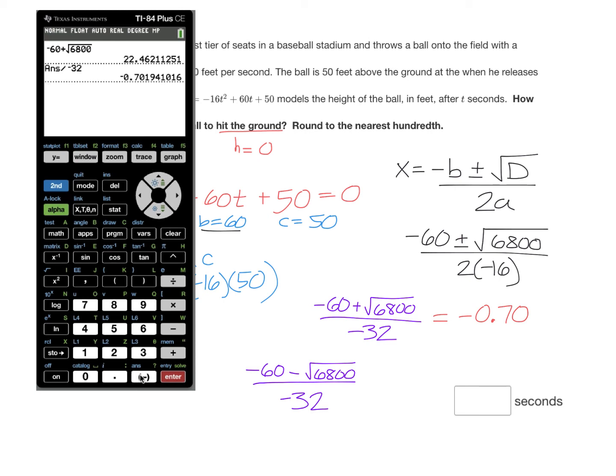To get our second answer, we'll do -60 - √6800. Click enter and then divide that by -32. And we get our second answer of 4.45. Now remember, these values here stand for a time. We have time = -0.70 and time = 4.45 seconds. Now time can't be negative. So this first answer here, we're not going to use. It doesn't make sense to have -0.7 seconds. The second answer though works. 4.45 would be our final answer. So that means that the ball takes 4.45 seconds to hit the ground.